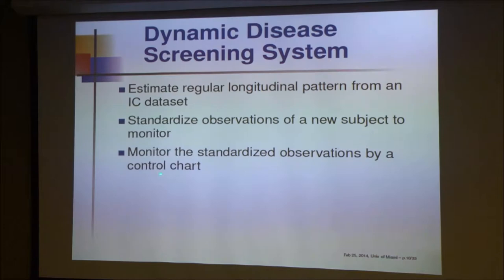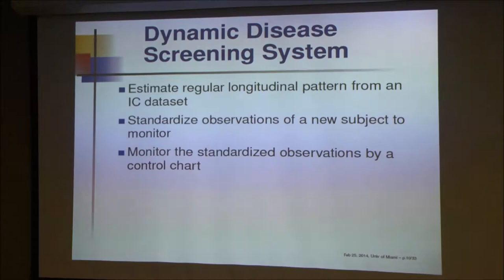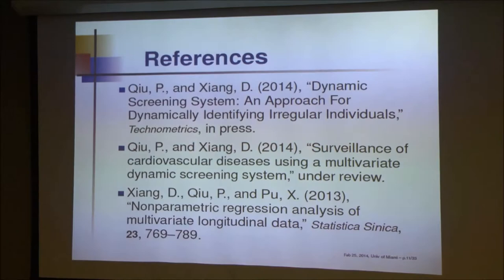Step two: standardize the observations of the new subject by subtracting the estimated mean of the regular longitudinal pattern and dividing by the standard deviation. By doing this standardization, we are performing cross-sectional comparison — we are comparing with healthy people. Step three: monitor the standardized observations by a control chart. I get the standardized data and sequentially monitor them. In this way, I combine the cross-sectional comparison with sequential monitoring. In my opinion, this is a new area.